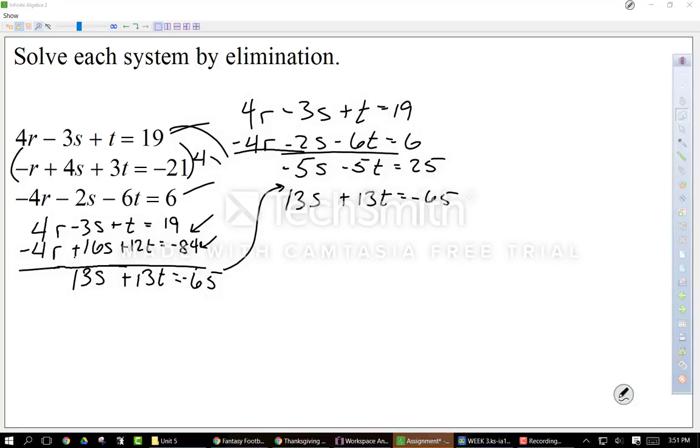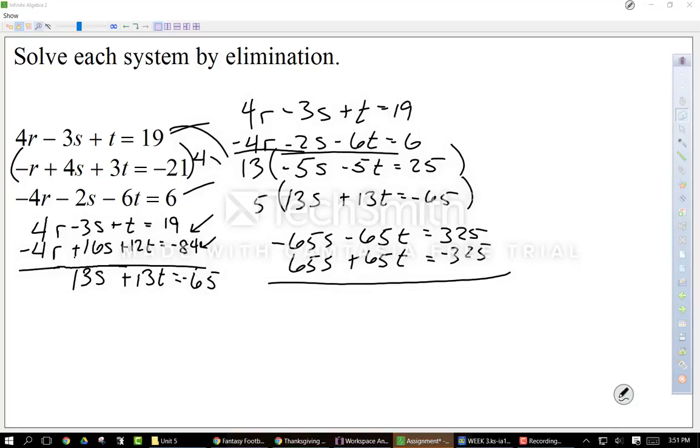Now let's go through this. I want to get rid of my S's. So let's multiply the top one by 13, the bottom one by 5, and let's go from there. So 13 times negative 5 is negative 65S minus 65T equals 325. Now let's do the bottom. 5 times 13 is 65S plus 65T equals negative 325. So because my S's are the same, I get 0. T's are the same, I also get 0. Equals 325 minus 325 is also 0, so I get 0 equals 0.